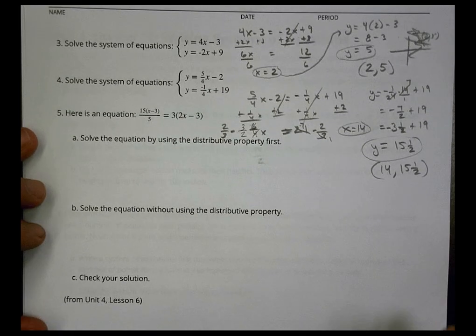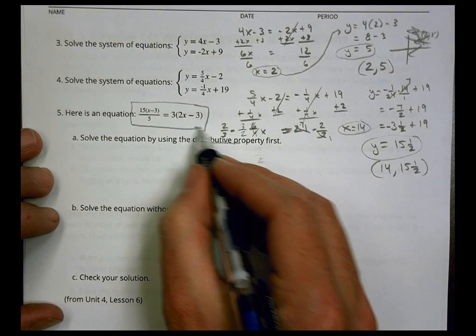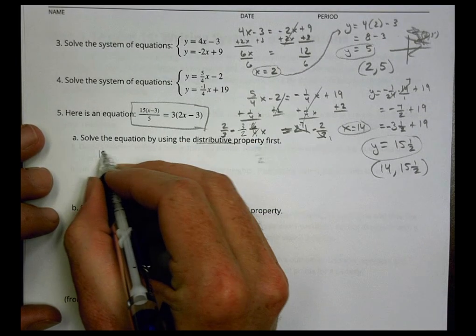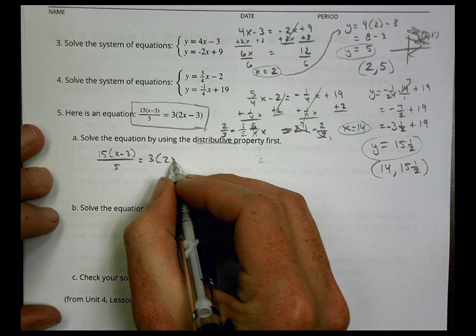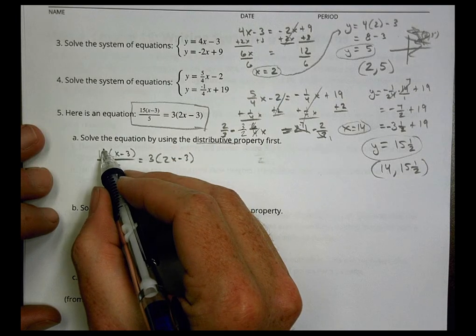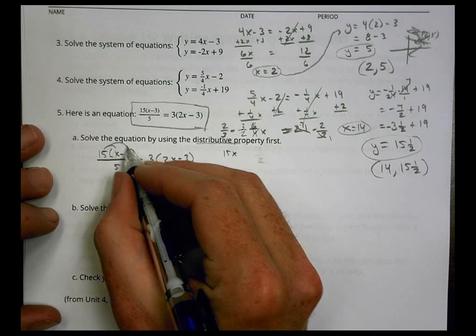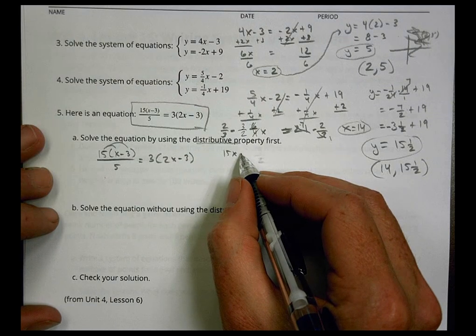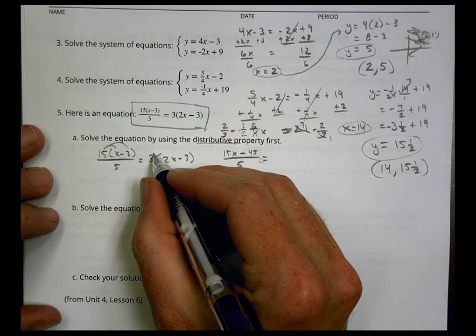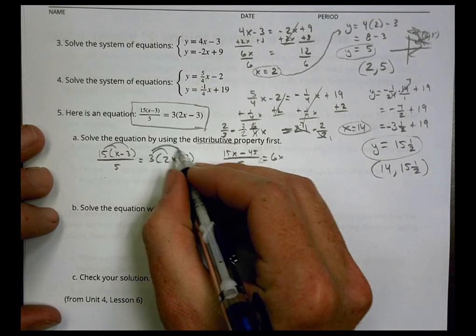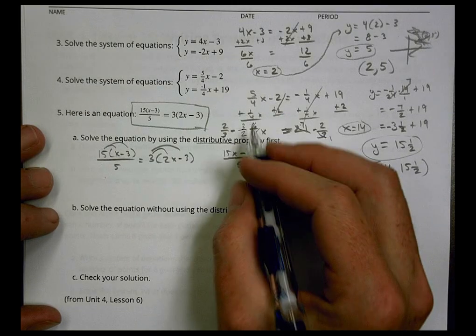And finally, our last one, number 5. It says to solve this equation here, first using the distributive property, and then without it. So here we go. We have 15(x - 3) over 5 equals 3(2x - 3). So distribute first. We would do 15 times x, which would be 15x. And then 15 times minus 3 is negative 45, all over 5. We distribute here, 3 times 2 is 6x, and then 3 times negative 3 is negative 9.